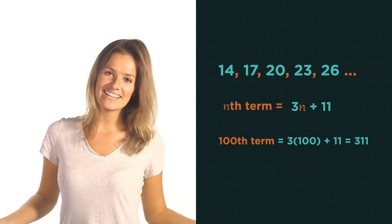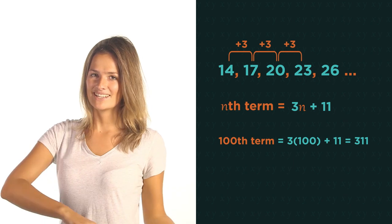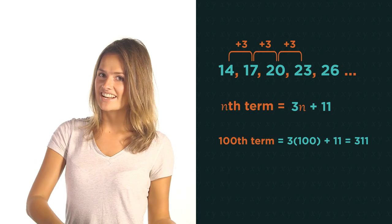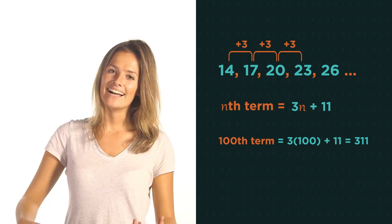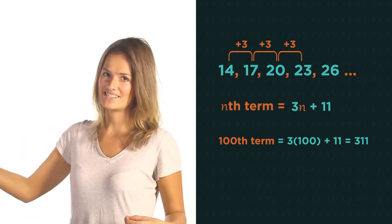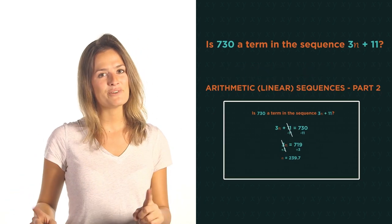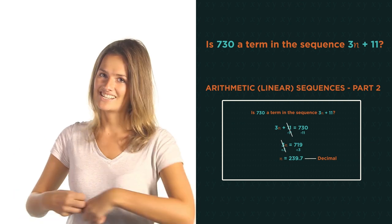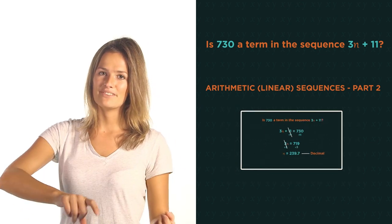That's nearly everything you need to know about arithmetic sequences. You know how to find the nth term rule. You can generate a sequence from this rule. And you can find any term in the sequence. There's just one more thing we need to discover. And that is how to work out if a number is actually in a sequence. So watch part 2 for that.